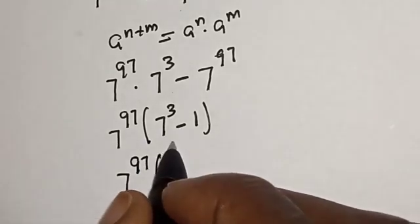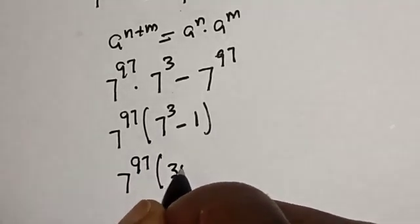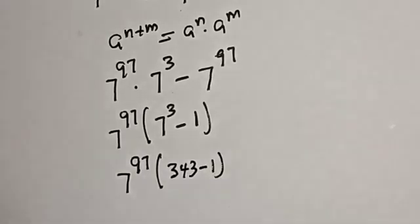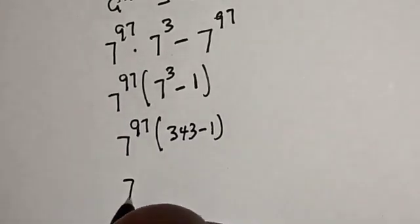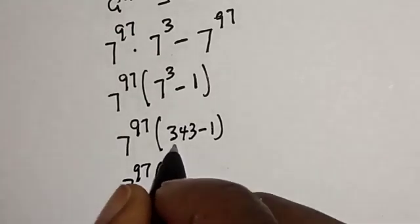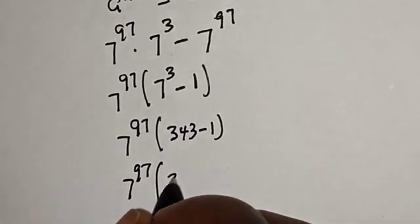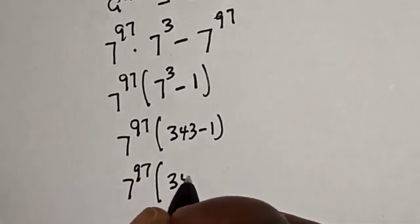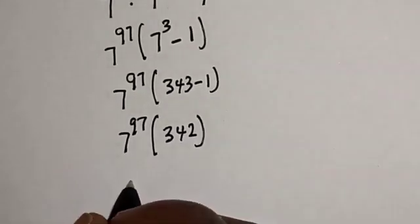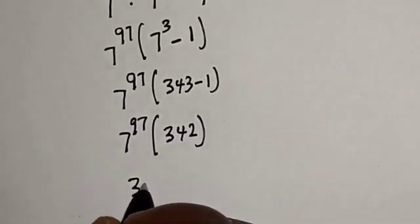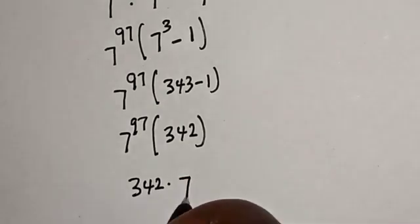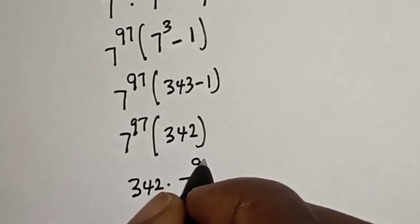7 raised to power 3 is 343. So this becomes 7 raised to power 97 multiplied by 343 minus 1, which is 342. Therefore our final answer is 342 multiplied by 7 raised to power 97.